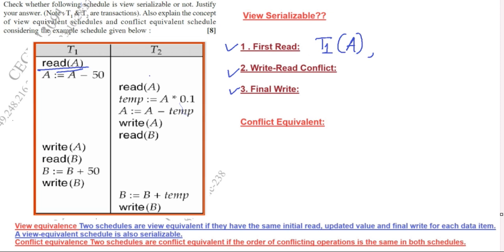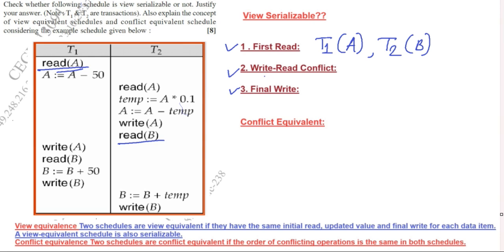Checking variable B: B is being read first at T2. So T2 is reading a fresh copy of B. The sequence for first read is: variable A is being read by T1 and variable B is read by T2.